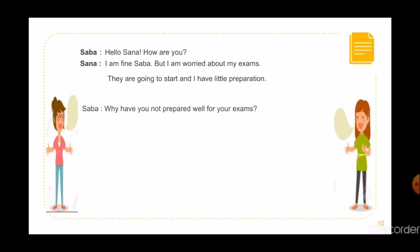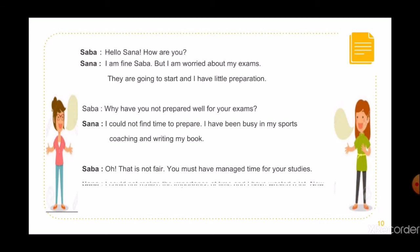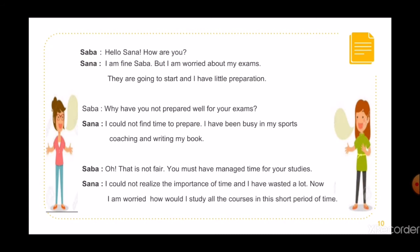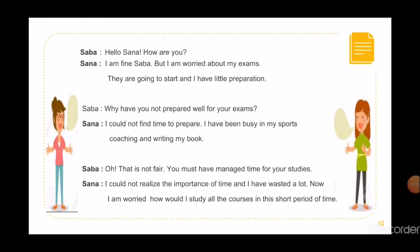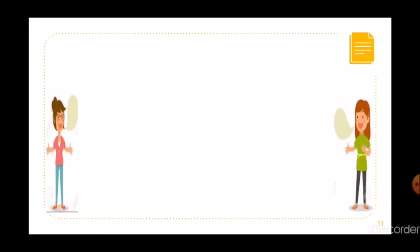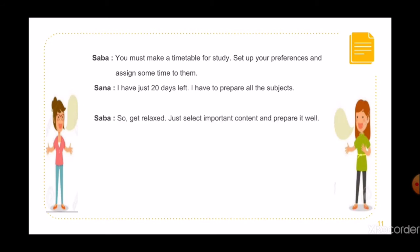Saba: Why have you not prepared well for your exams? Sana: I could not find time to prepare. I have been busy in my sports coaching and writing my book. Saba: Oh, that is not fair. You must have managed time for your studies. Sana: I could not realize the importance of time and I have wasted a lot. Now I am worried — how would I study all the courses in this short period of time? Saba: You must make a timetable for study, set up your preferences and assign some time to them. Sana: I have just 20 days left. I have to prepare all the subjects. Saba: So get relaxed, just select important content and prepare it well. Sana: Alas, I had given time to it earlier.